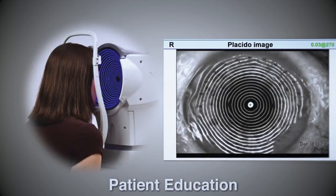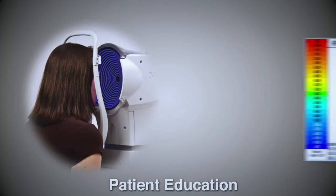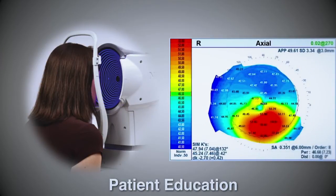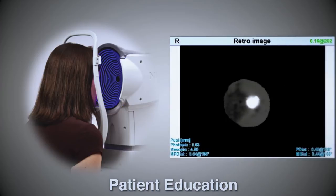Educate your patients by showing them their dry eyes or pterygium with the placido rings, existing keratoconus with topography maps, or current development of cataracts with retroillumination images.